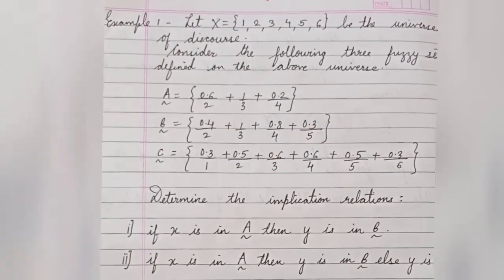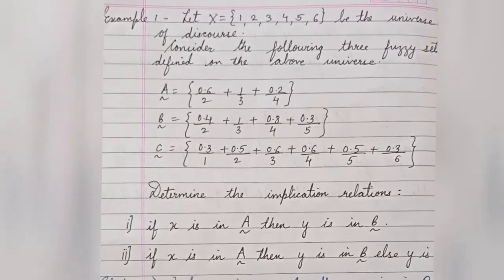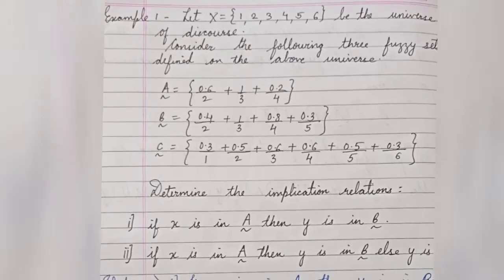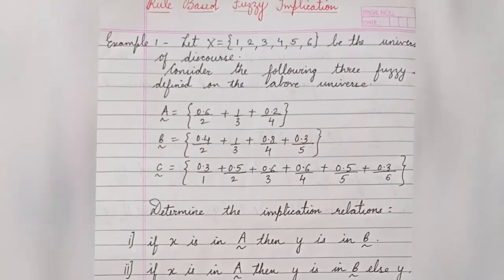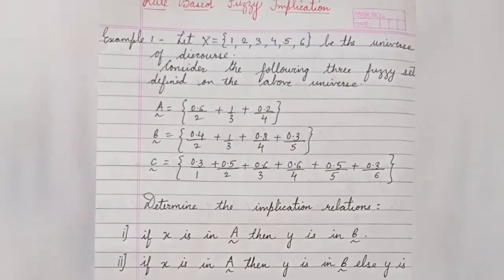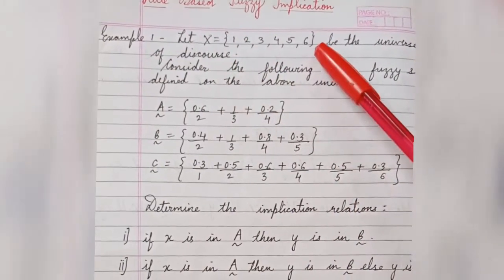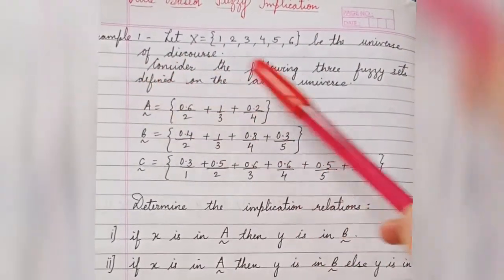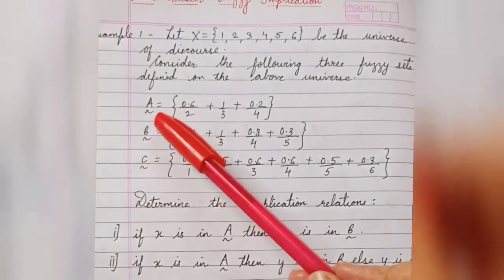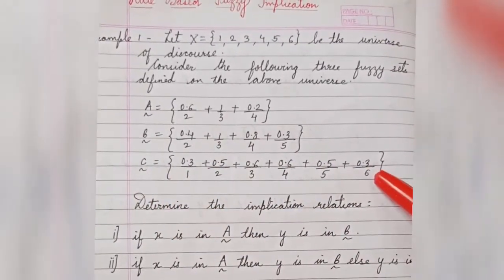Welcome back to the soft computing series. This video covers a rule-based fuzzy implication example. In my previous video I discussed what is fuzzy logic and the two rules of rule-based fuzzy implication — do watch that first video. The example is: let X equal to six elements be the universe of discourse. Consider the following three fuzzy sets defined on the above universe: fuzzy set A with three elements, fuzzy set B with four elements, and fuzzy set C with six elements.